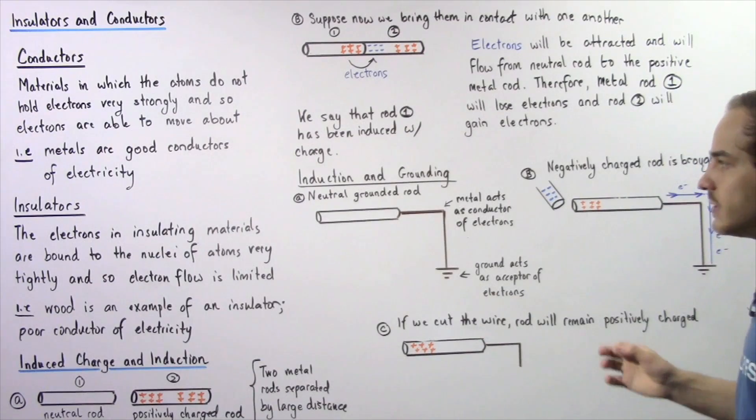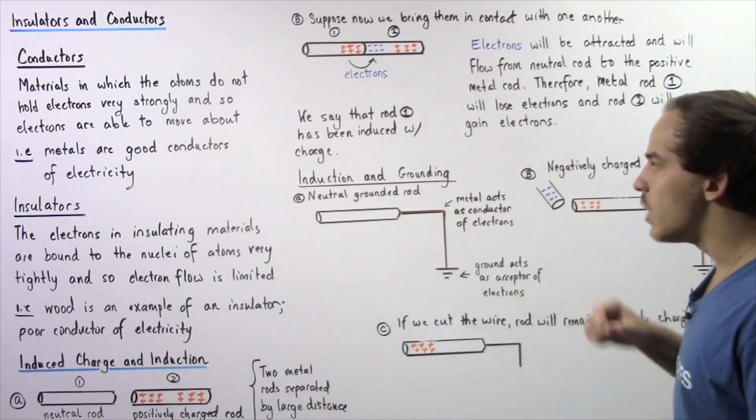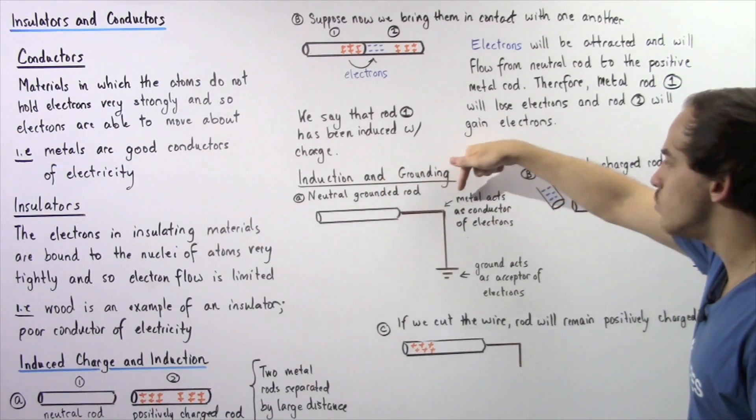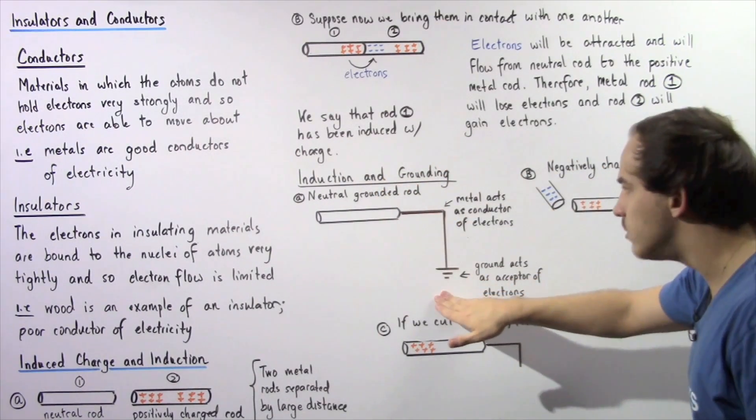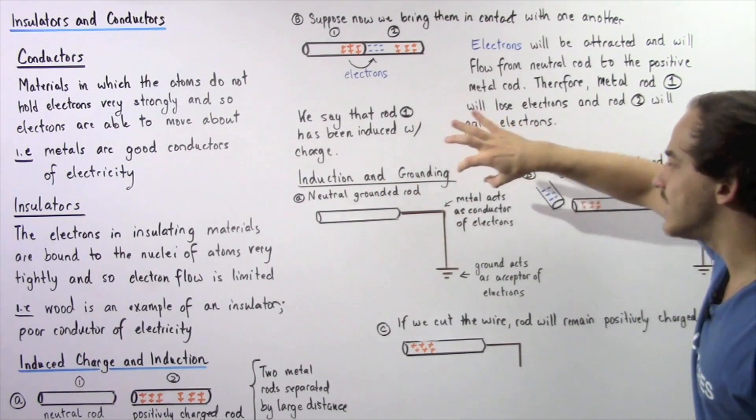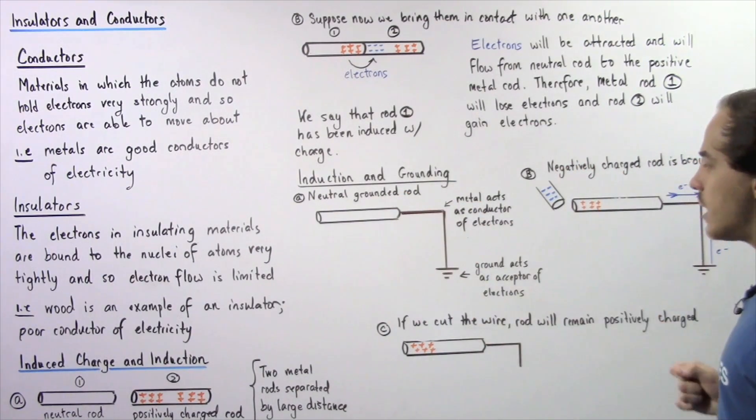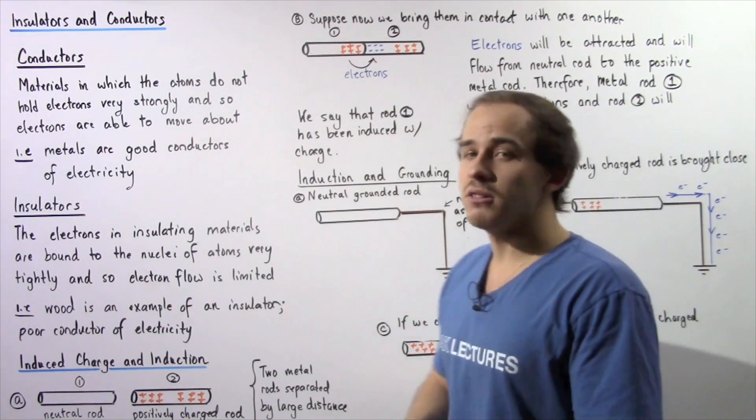This is a symbol that means grounded. So this is a neutral rod and we connect our rod to a metal wire, and that metal wire is connected to the ground. The metal acts as a conductor of electrons and allows the flow of electrons, and the ground acts as an acceptor of those electrons.